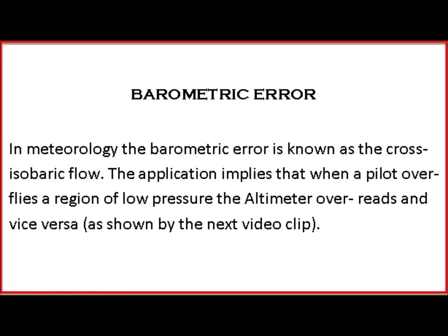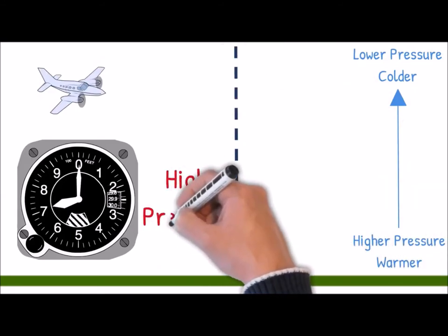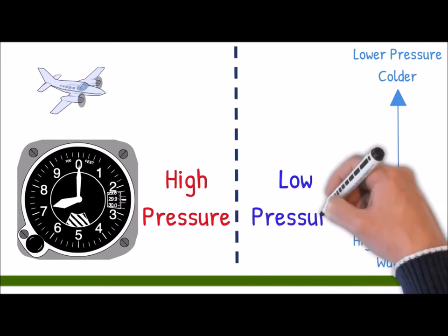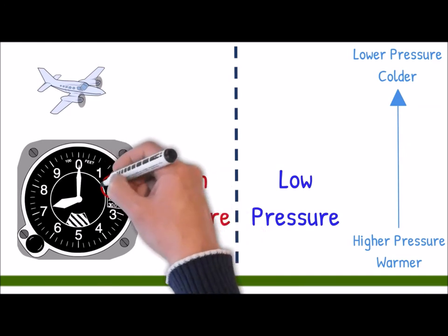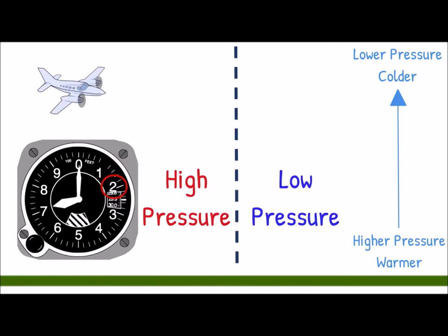Barometric error. In meteorology, the barometric error is known as the cross-isobaric flow. The application implies that when a pilot overflies a region of low pressure, the altimeter overreads, and vice versa. When the aircraft is flying from high pressure to low pressure without adjusting the altimeter setting, the altimeter thinks it is climbing. And if the pilot did nothing, the altimeter would display a higher altitude — say 7,200 feet. Slowly, the pilot will descend to maintain the same indicated altitude of 7,000 feet.